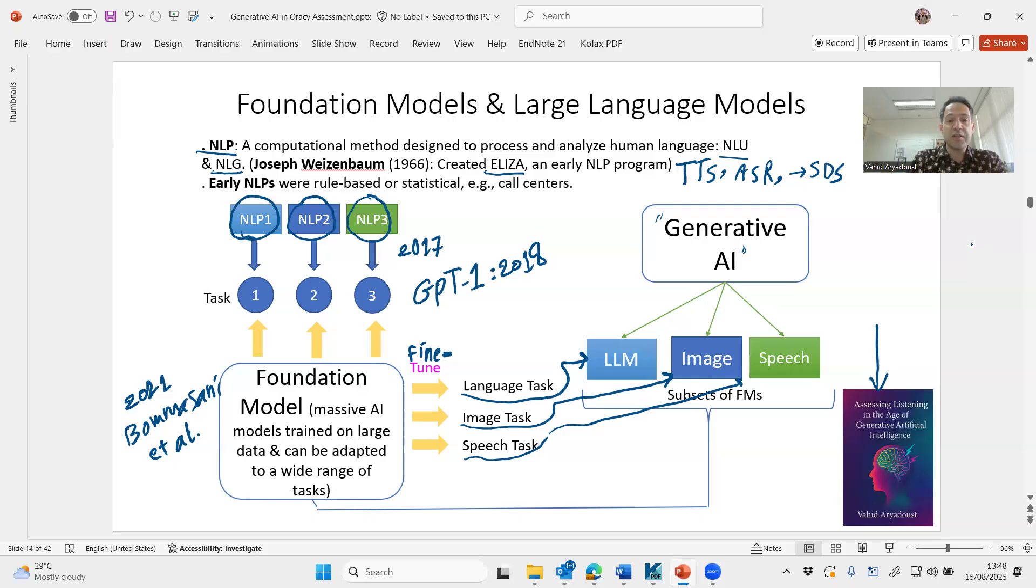According to Bomasani and colleagues, these models have two specific properties, which makes it exciting, but also anxiety inducing. One is the property of emergence, and the other one is the property of homogenization.